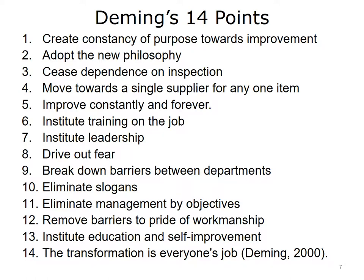The system of profound knowledge is the basis for application of Deming's famous 14 points for management for transforming business effectiveness, first presented in his book Out of the Crisis: 1. Create constancy of purpose towards improvement. 2. Adopt the new philosophy. 3. Cease dependence on inspection. 4. Move towards a single supplier for any one item. 5. Improve constantly and forever. 6. Institute training on the job. 7. Institute leadership. 8. Drive out fear. 9. Break down barriers between departments. 10. Eliminate slogans. 11. Eliminate management by objectives. 12. Remove barriers to pride of workmanship. 13. Institute education and self-improvement. 14. The transformation is everyone's job.